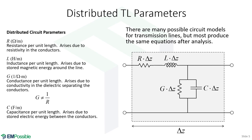One thing to keep in mind: we have resistance R and conductance G, and while resistance is one divided by conductance in general, this R is not one divided by this G — they are two completely different things representing different physical phenomena. The distributed resistance R represents the conductivity of the wires themselves. The conductance G represents conductance through the dielectric separating the wires. So don't think we can calculate G from R — two very different things are happening here.